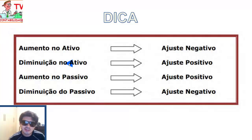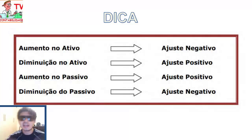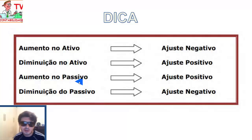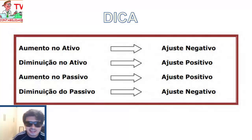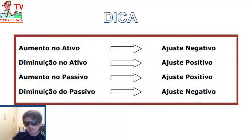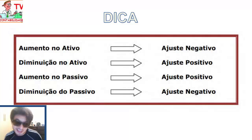Aumentou o passivo no balanço patrimonial? No fluxo de caixa, ajuste positivo. Por exemplo: você comprou mercadoria a prazo, aumentou o fornecedor no passivo — você não pagou nada ainda, então impacto positivo no caixa. Diminuiu o passivo? Ajuste negativo no fluxo de caixa. Se a dívida com fornecedor diminuiu, é porque você pagou; saiu dinheiro do caixa — ajuste negativo.